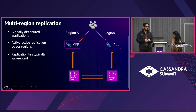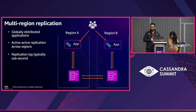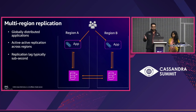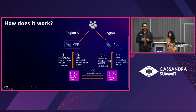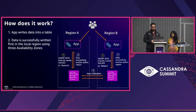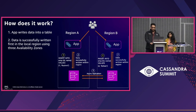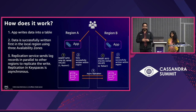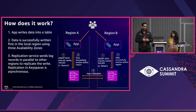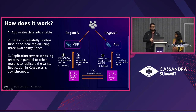Now let's look at a feature we recently launched: multi-region replication. Multi-region replication provides fully managed active-to-active replication across all AWS regions, helping customers build globally distributed applications. You can read and write data to any region, and the replication lag between regions is typically within a second. When the application writes data, it's successfully written in the local region across three AZs, success is returned, and then a replication service asynchronously sends the log records to the other configured regions.